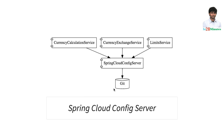One of the solutions present with the Spring Cloud Config Server enables you to auto-refresh. So as soon as you make a change in the Git repository, it can auto-refresh the configuration in all the microservices.